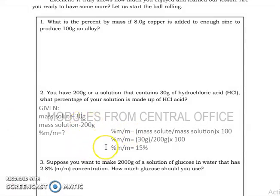Let's have problem number 2. You have 200 grams of a solution that contains 30 grams of hydrochloric acid. What percentage of your solution is made up of hydrochloric acid? The givens are mass of solute 30 grams, mass solution is 200 grams. We're looking for the percent by mass of hydrochloric acid. Just recall the formula and substitute: 30 grams divided by 200 grams times 100, you'll arrive at 15%.